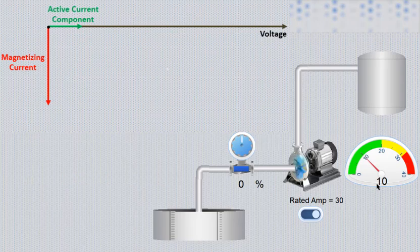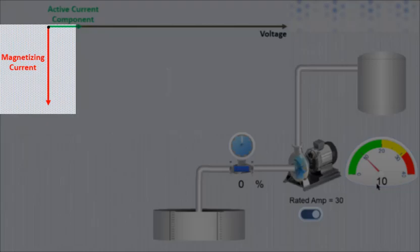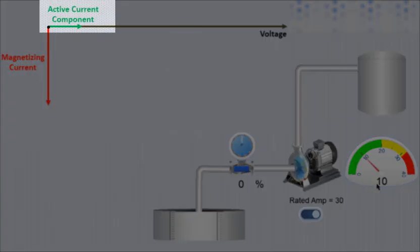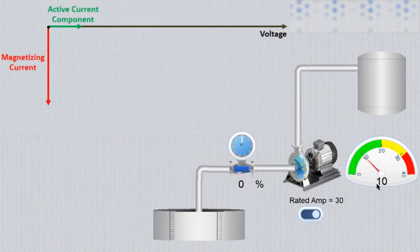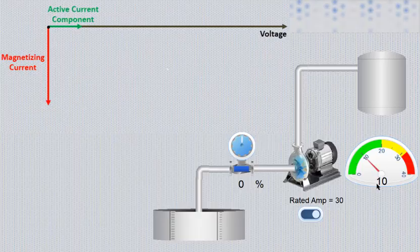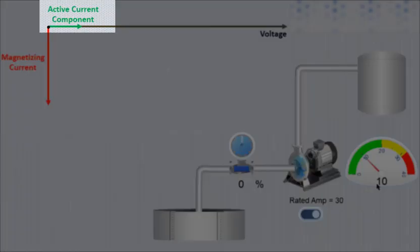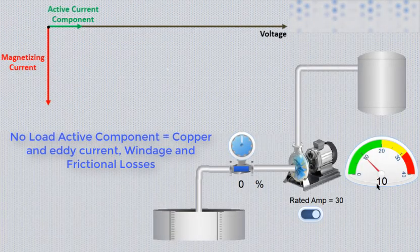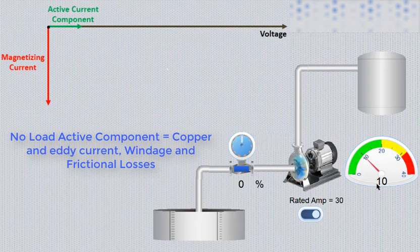Normally no load current consists of magnetizing current and active component of current. Active component is in phase to voltage, while magnetizing component lags 90 degree behind voltages. No load active component comprises copper and eddy current, plus windage and frictional losses. This component is normally less than magnetizing current, which is reactive component of current.